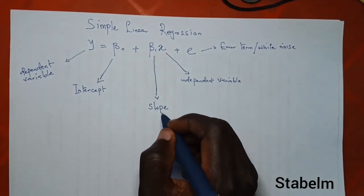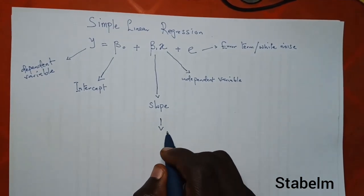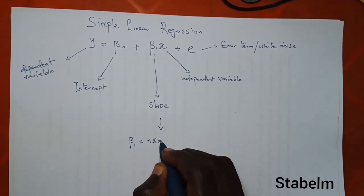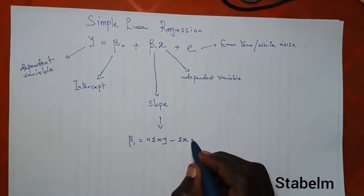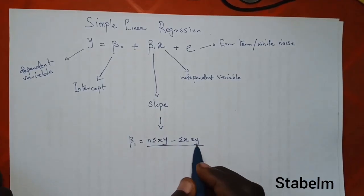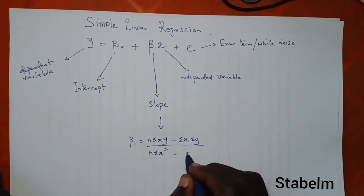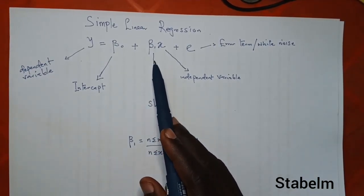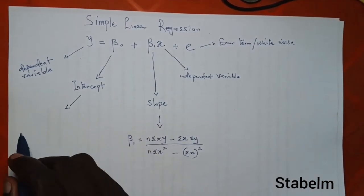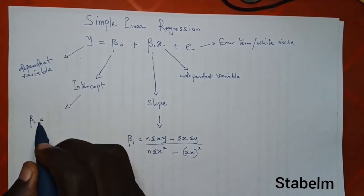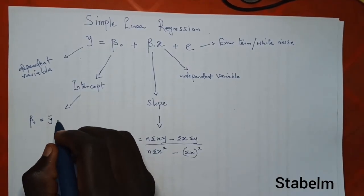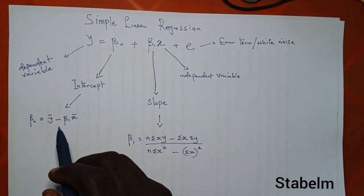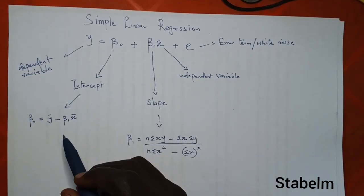The slope has this formula to calculate it. Beta 1 equals n times summation xy minus summation x times summation y, all divided by n times summation x squared minus summation x all squared. And for the intercept, we use the simple formula: beta naught equals y-bar minus beta 1 times x-bar. So the value of beta 1 is needed first to get the value of beta naught.